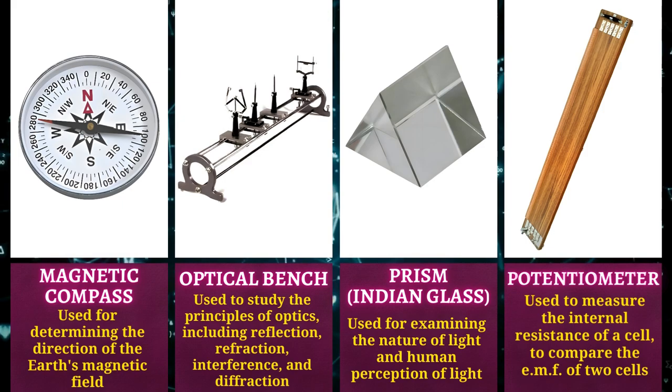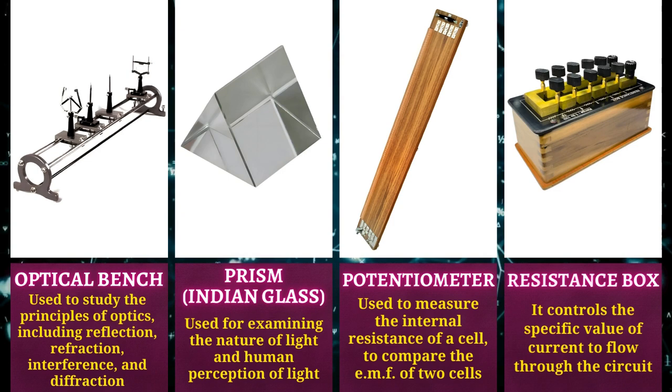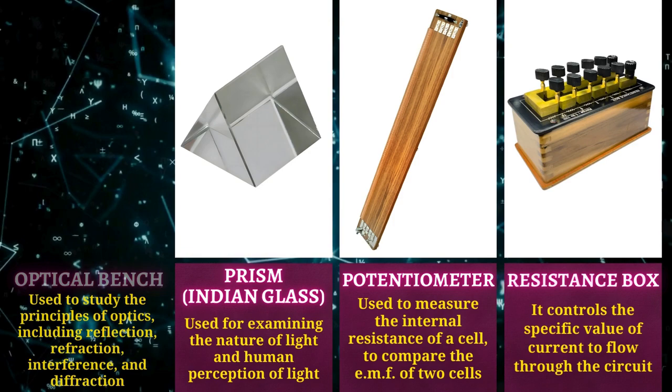Potentiometer is used to measure the internal resistance of a cell and to compare the EMF of two cells. Resistance box controls the specific value of current to flow through the circuit.